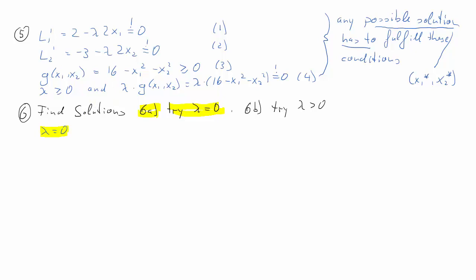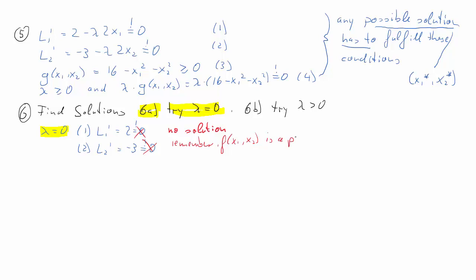Setting lambda equal to 0, the partial derivatives in conditions 1 and 2 simplify to 2 and negative 3 respectively. Our necessary conditions require these to equal 0, but clearly 2 and negative 3 are not equal to 0. So very quickly we realize that with lambda equal to 0, there is no solution — consistent with f being a plane with no unconstrained maximum.